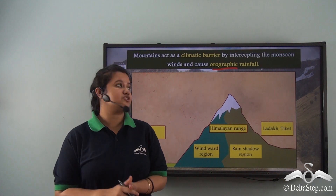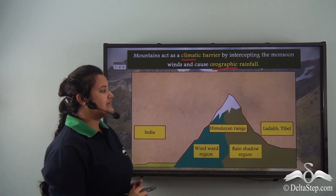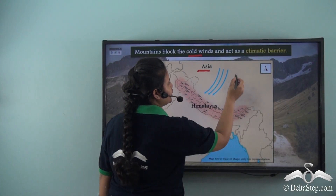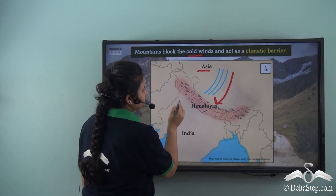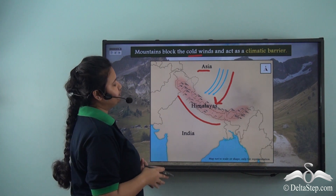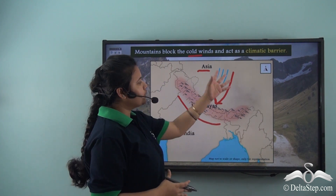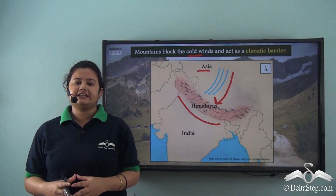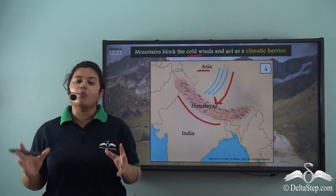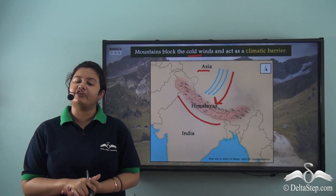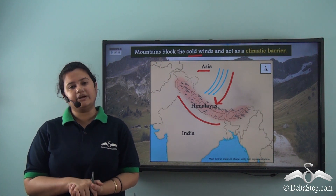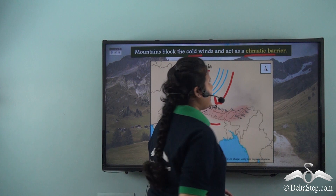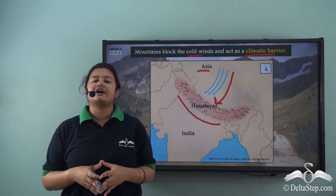Just like the Himalayas, other mountain ranges of the world act as a climatic barrier by intercepting the monsoon winds and causing orographic rainfall. Cold winds coming from Central Asia are also blocked by the Himalayan range, which is present in the north and northeastern part of India. Due to the presence of the Himalayas, cold winds cannot enter India, and therefore India does not have bitter cold during winters. Thus, the Himalayan range helps to maintain a warm and humid climate in India. Similarly, other mountain ranges also act as a climatic barrier and are responsible for determining the climate of a region.